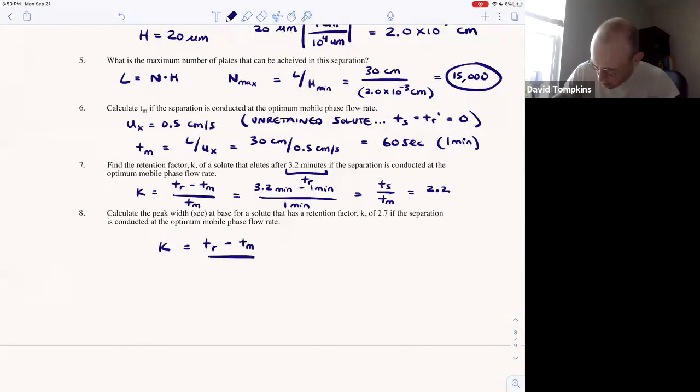So recall that retention factor is TR minus TM over TM, and this is all 2.7. So 2.7 equals TR minus TM, which is 1 minute, over TM.